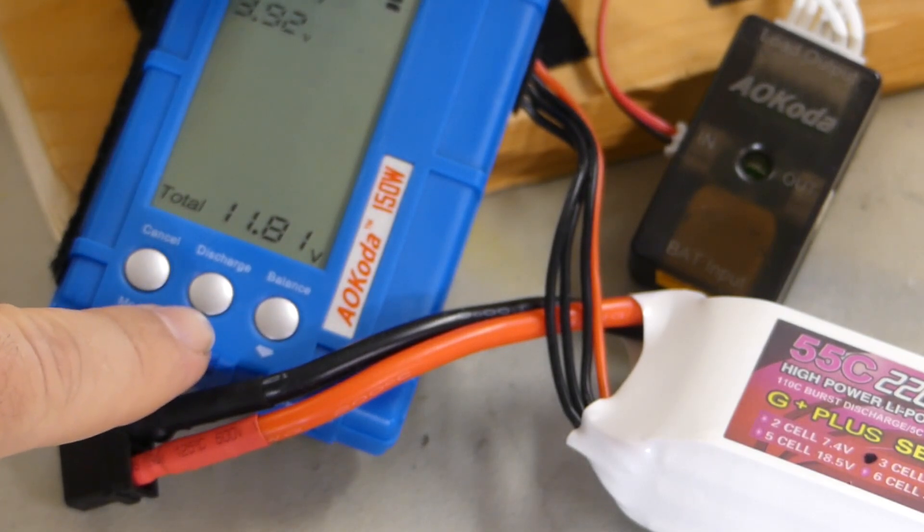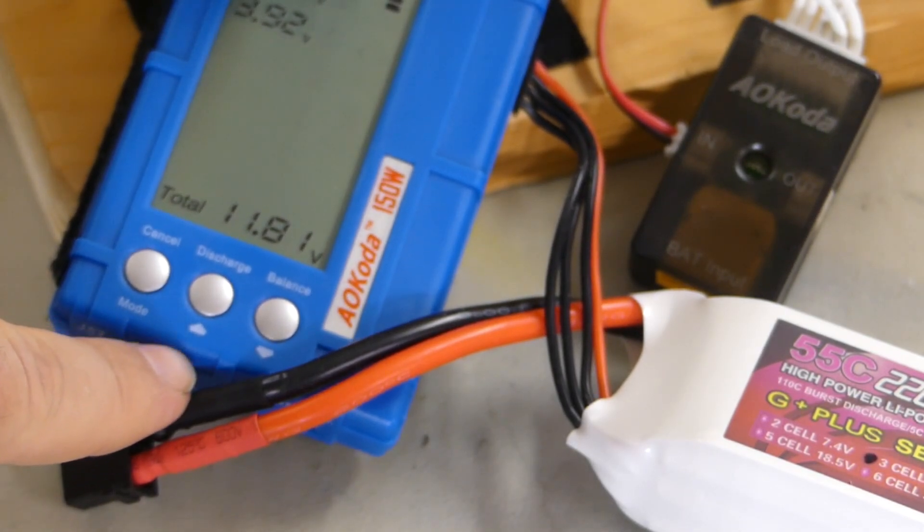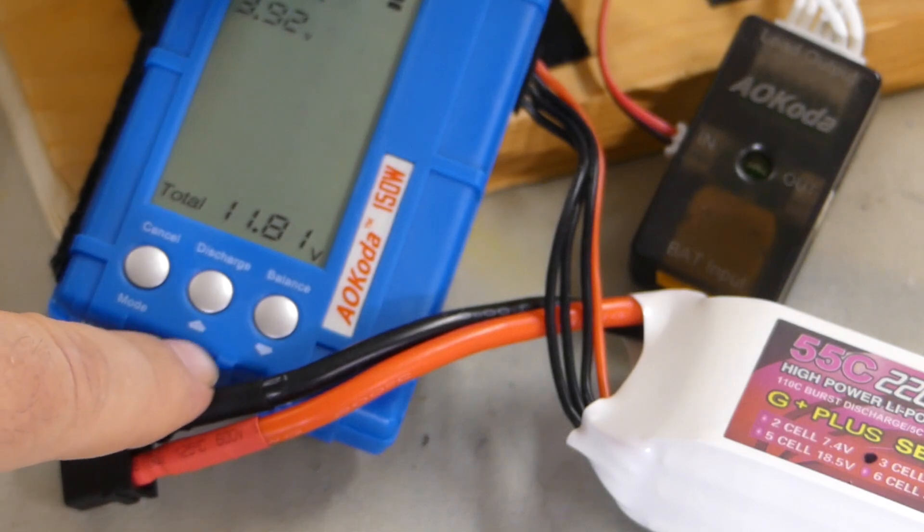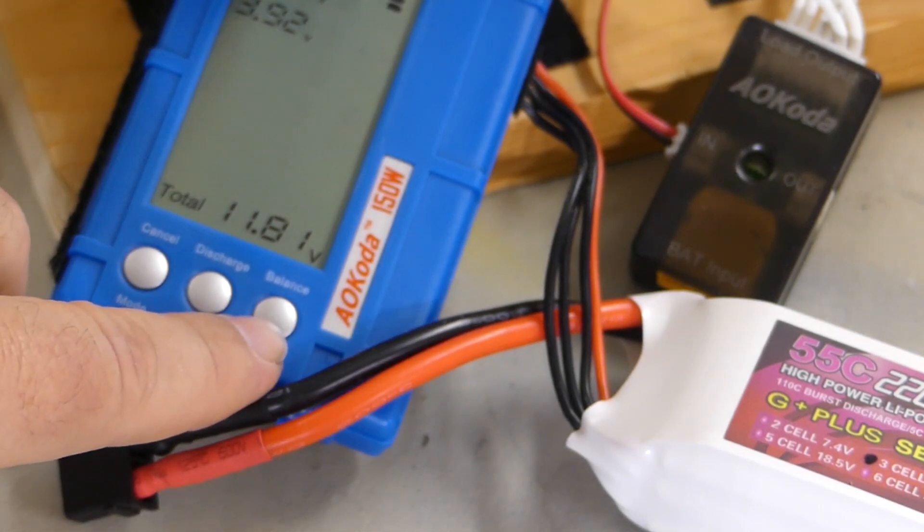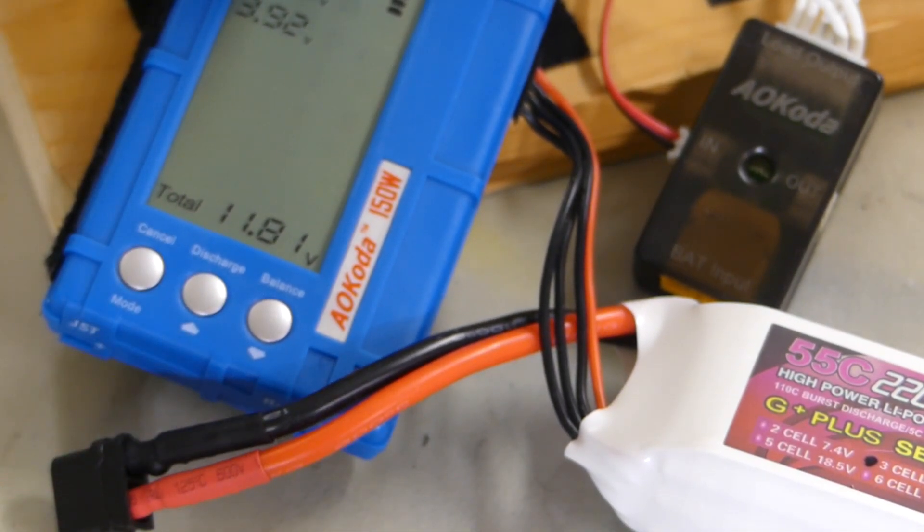The next one says discharge and up selection arrow, and then a balance one. It shows a down selection arrow. So really, I'm only using it to balance out the battery and discharge it. Balancing it is no different than any other balancing device. It does take some time, however discharging it, this thing works pretty quick.